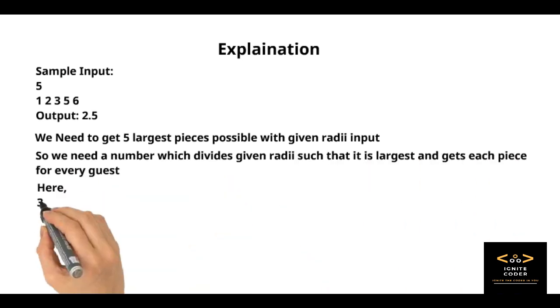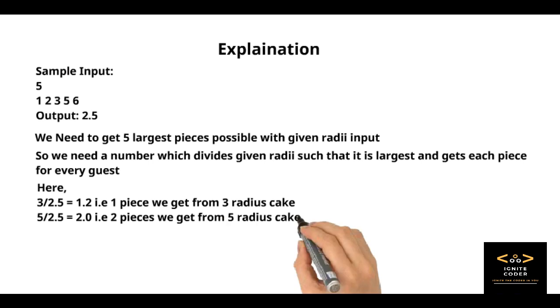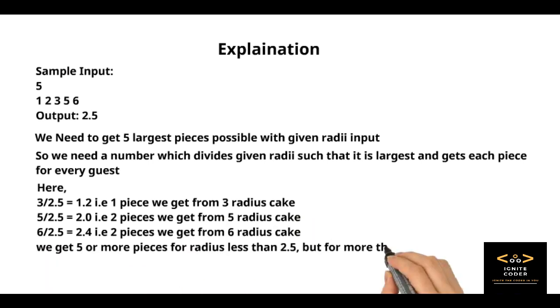So let's see how the answer is 2.5. We need to get five largest pieces possible with the given radii input. When you divide each radius by 2.5, you get like 1 by 2.5 equals 0, 2 by 2.5 equals 0 point something but we take it as 0.